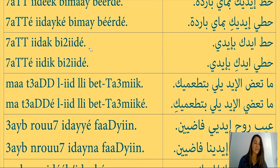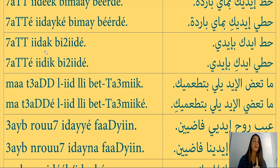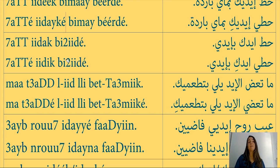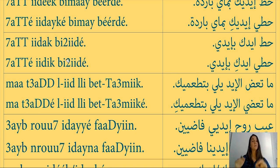Hatte idayk bi iday or hatte idayk bi iday — put your hand in my hand. Hat or hatte is the imperative of put. Idayk is one hand your hand masculine, idayk feminine. Bi iday means in my hand. This expression means let's cooperate, let's do this together, or in another context, let's be together.